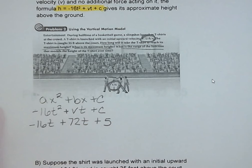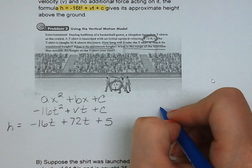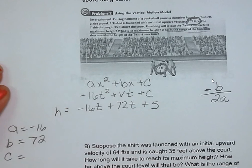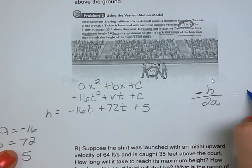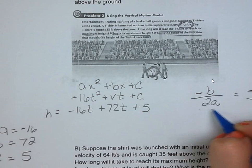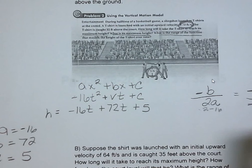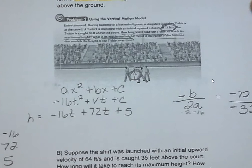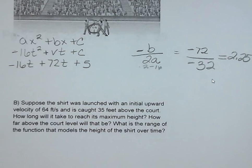To find our vertex, we take the opposite of b over 2 times a. Our a is negative 16, our b is 72, and our c is 5. So we've got negative 72 over negative 2 times negative 16, which is negative 32. And when you divide that, you're going to get 2.25 seconds. That answers the first part of the question, how long will it take to hit its vertex, to hit that maximum height, 2.25 seconds.